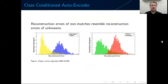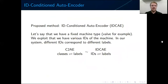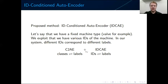The point of the class-conditioned autoencoder is to separate the distribution of known and unknown, and as you can tell from this picture, those distributions behave similar to matches and non-matches. Our solution, the ID-conditioned autoencoder, fixes a machine type and exploits the fact that we have various IDs of that machine. In our system, IDs correspond to labels — just as in the class-conditioned autoencoder classes correspond to labels, in our case IDs correspond to labels. This is the key adaptation we have made.